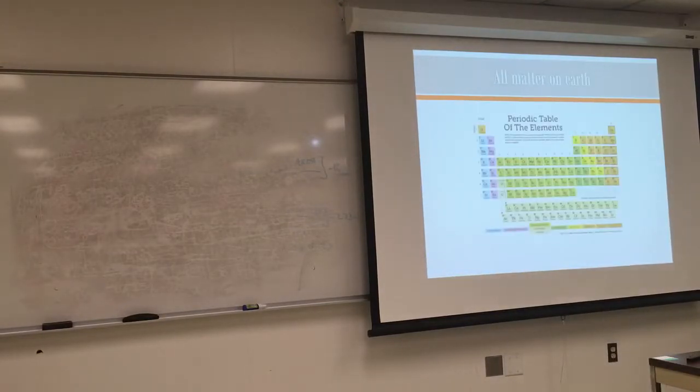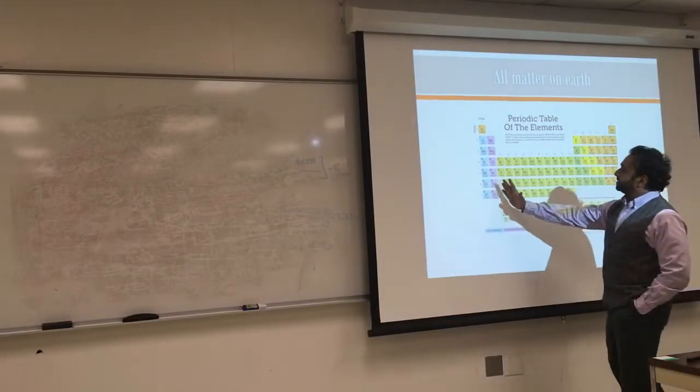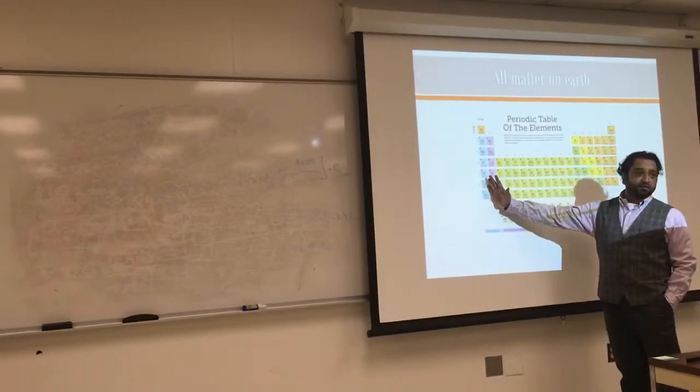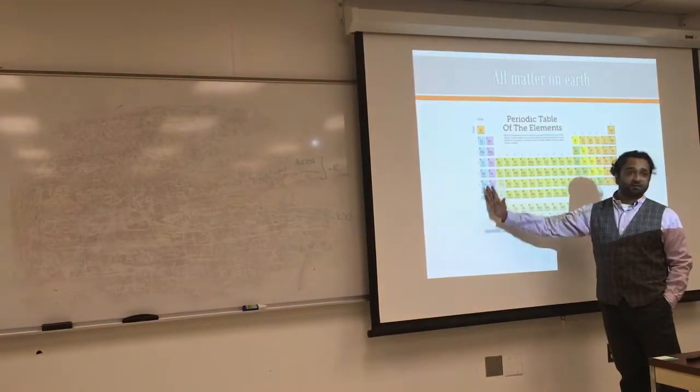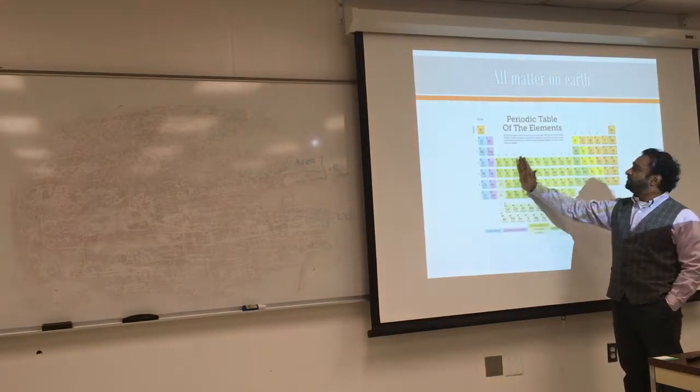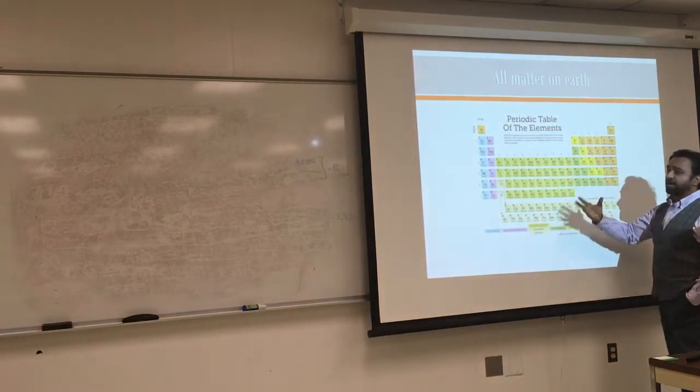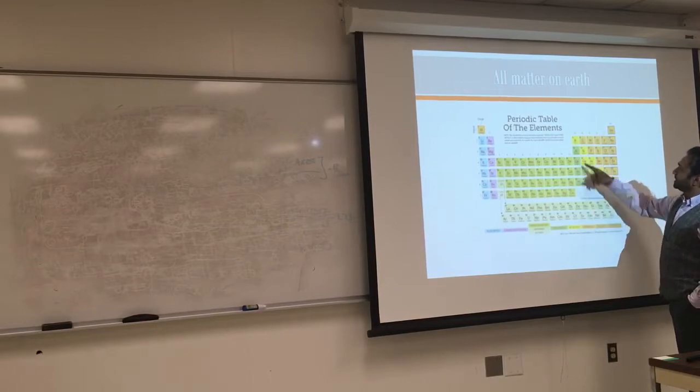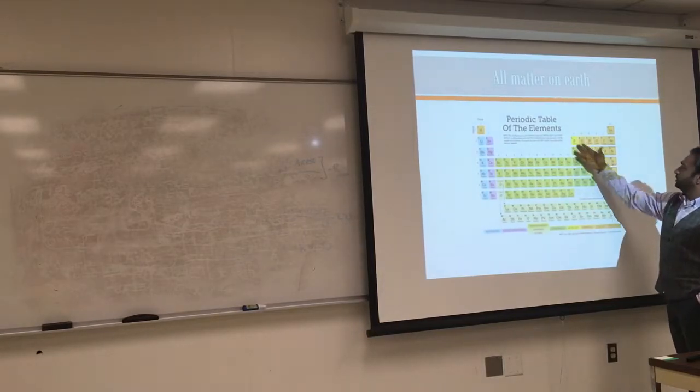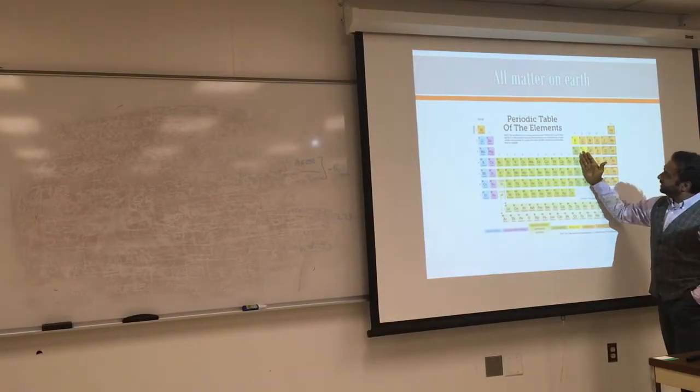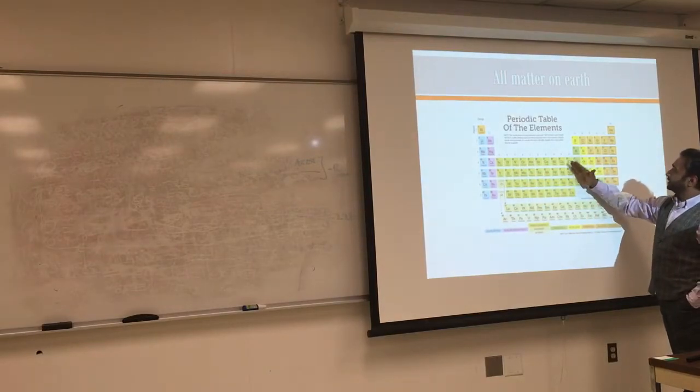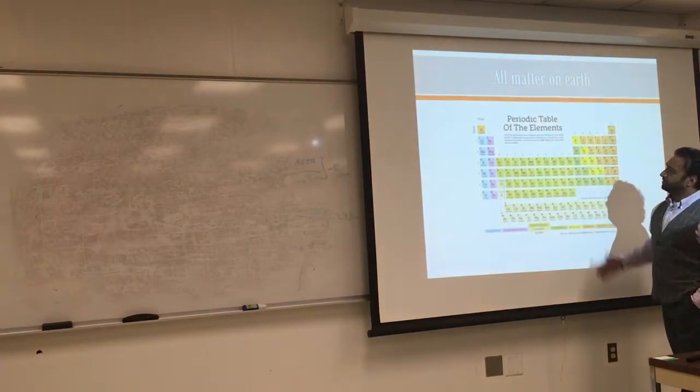The periodic table was organized based on the amount of electrons in the last orbit and based on their mass. We realized that there are materials that are conductive and materials that are not conductive. We have what is called the semiconductors. And here we have the metals, which are conductive. And we have here non-conductive material.